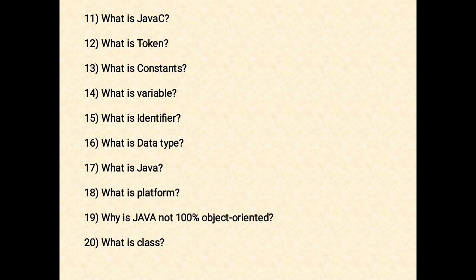The next question: what is a token? A token is an individual unit in your program — basically individual words, symbols, and punctuation marks. The next question: what is a constant? Constants are fixed values that do not change during the execution of a program.